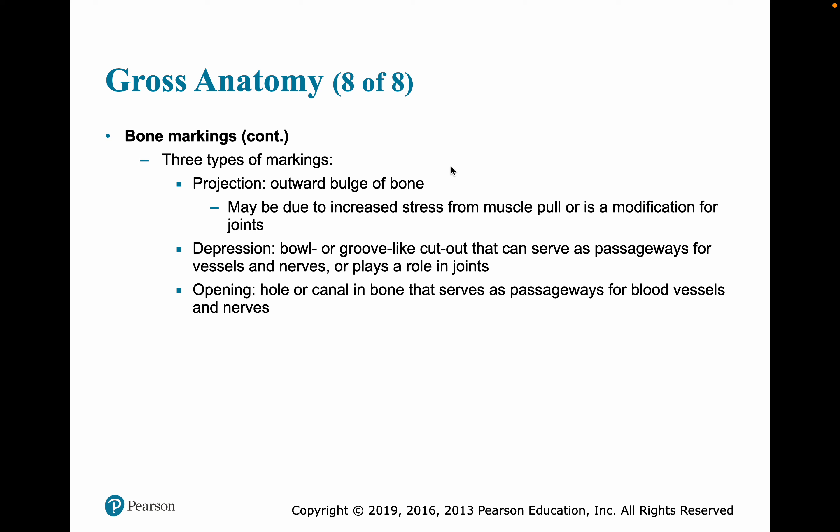A projection is an outward bulge of the bone, usually due to increased stresses — stresses being a good thing — such as pulls from muscles or modifications for joints. Depressions are bowl- or groove-like cutouts that serve as passageways for vessels and nerves and play a role in joints. There are also holes or canals in bone that serve as passageways for blood vessels and nerves.